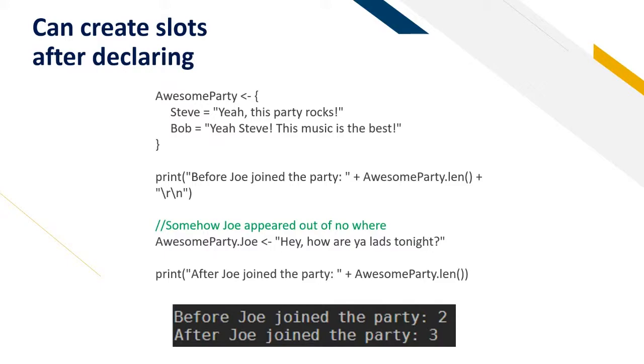Before Joe joined the party, the length is two, so there's two people in the party. Then we do the new slot operator to assign Joe to this table, and after Joe joined the party, the length is three, so now there's three people in this party.